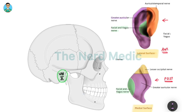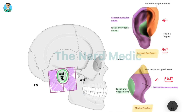Next, the lateral parts of both the anterior and posterior aspects are supplied by the greater auricular nerve, as you can see. In our image, both the anterior and posterior aspects show that the lateral part of the pinna is supplied by the greater auricular nerve.